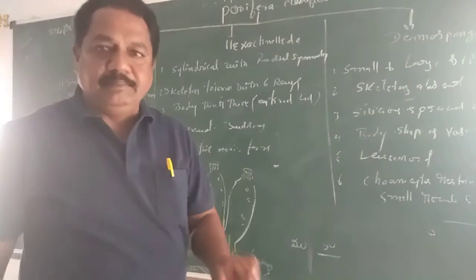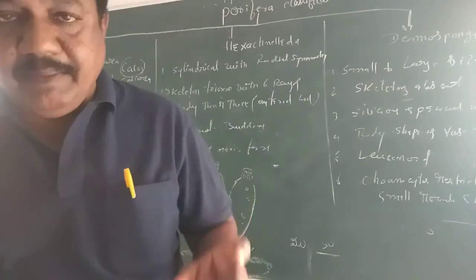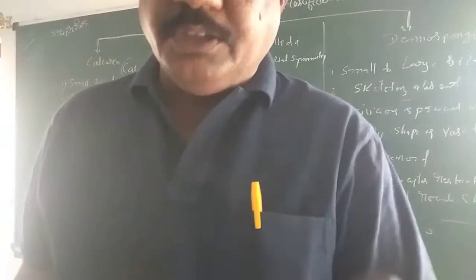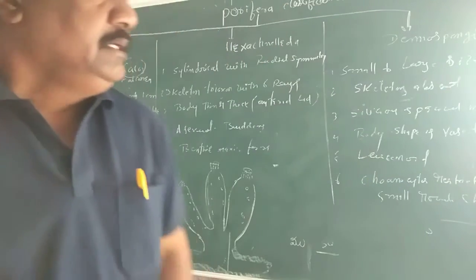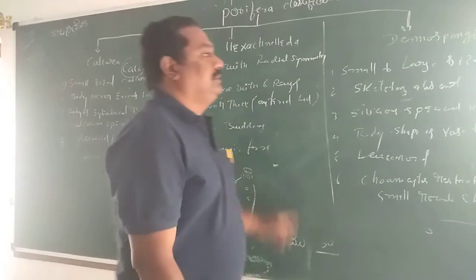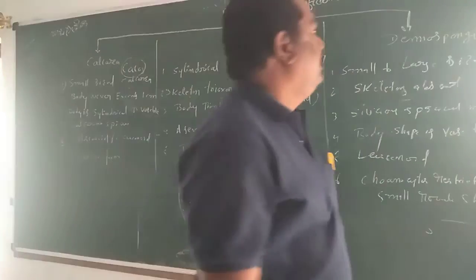Hexactinellida: if the spicules are made by silica, such groups of Porifera are included in Hexactinellida.